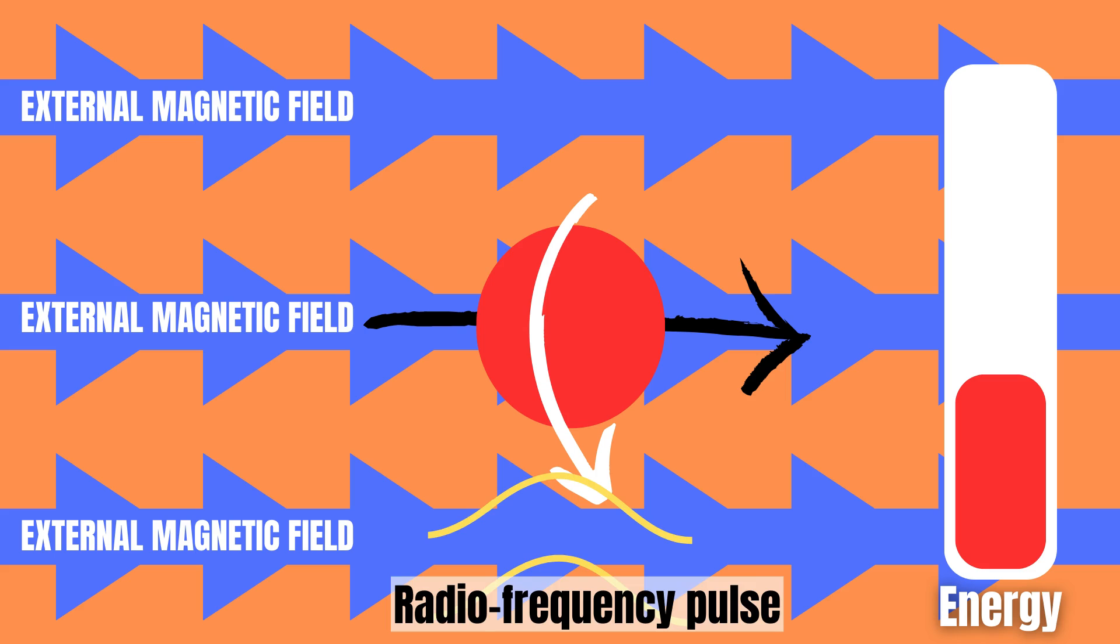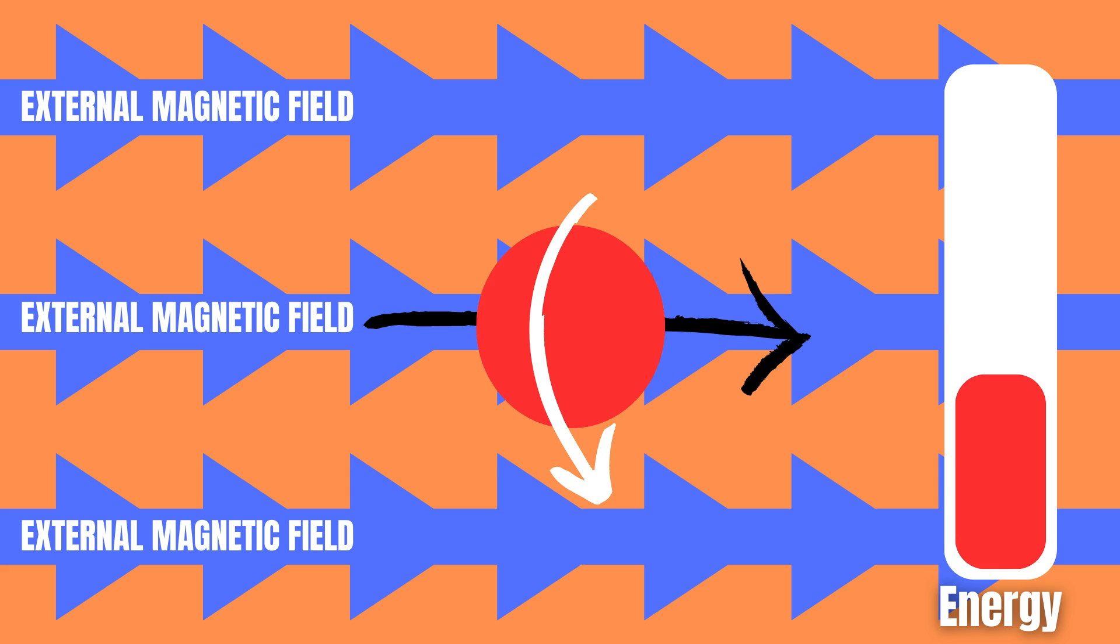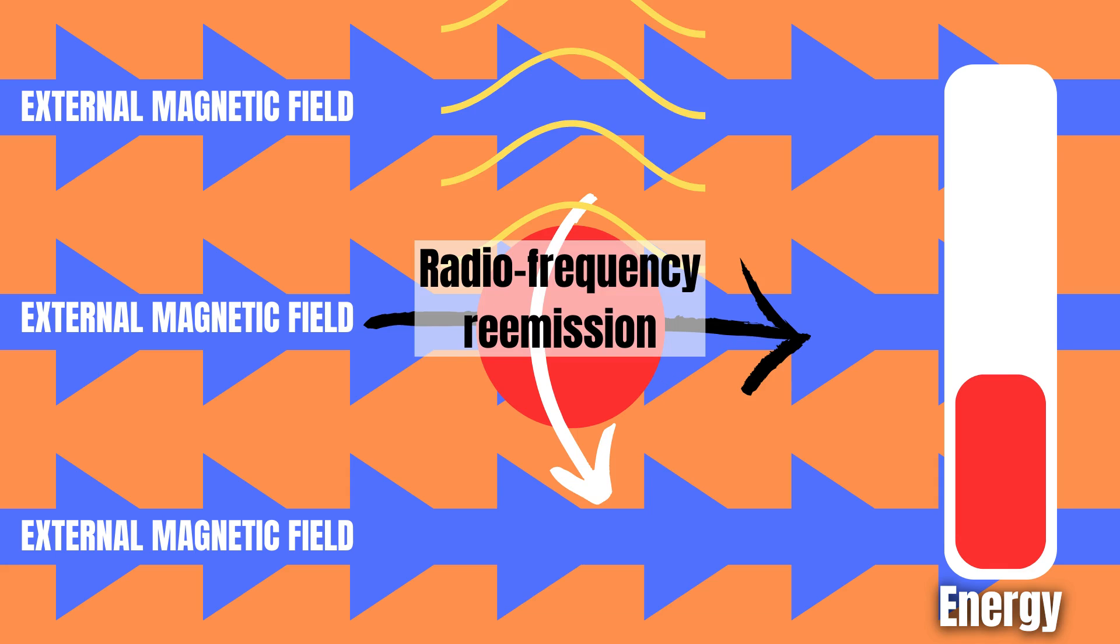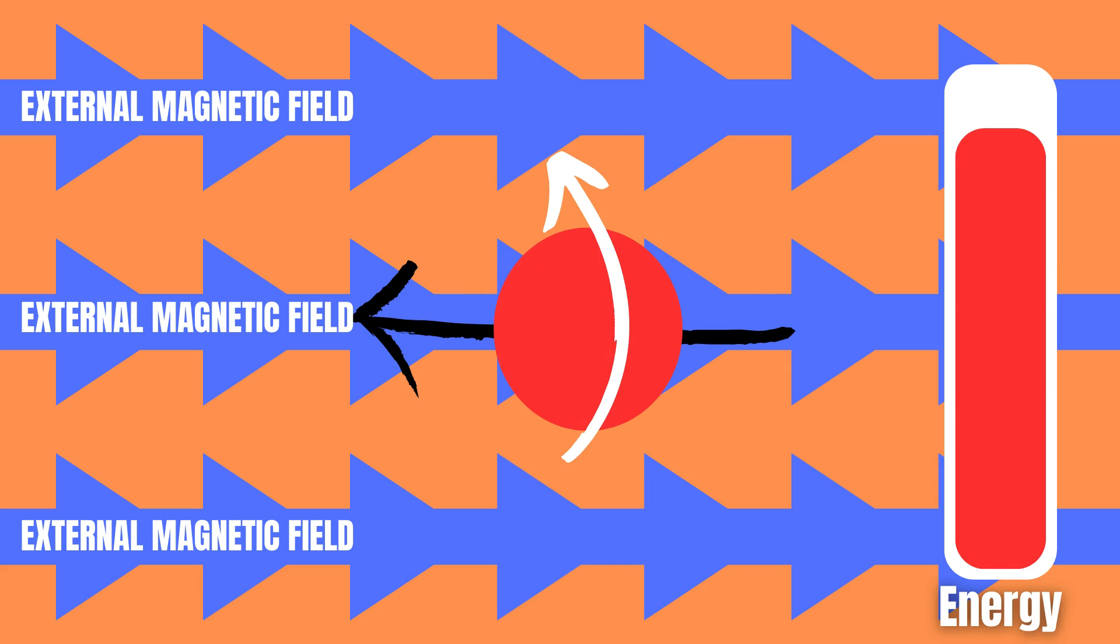The sample is then exposed to bursts of radio waves of the right frequency, causing the nuclei to flip. Then once the nuclei flip back, it releases the energy it took to flip it, which can then be measured.